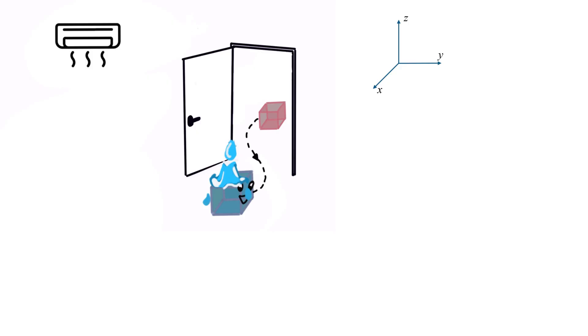So, our air parcel, which is invisibly small, starts in a warm outdoor environment. Its initial position is X1, Y1, Z1 at time T1, where its temperature is T1.